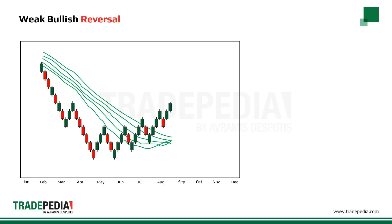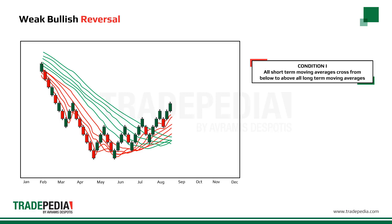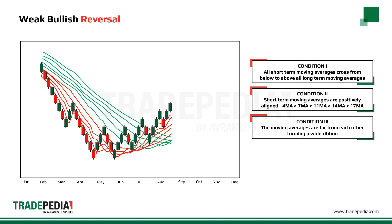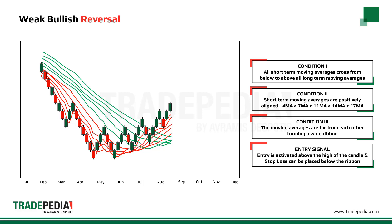A weak bullish reversal signal is given when the following conditions are met. Condition one: all short-term moving averages cross from below to above all long-term moving averages. Condition two: short-term moving averages are positively aligned — that is, the 4 period average is above the 7th, the 7th above the 11th, the 11th above the 14th, and so on. Condition three: the moving averages are far from each other, forming a wide ribbon, giving a weak signal. The entry is activated above the high of the candle that generated the signal, and a stop-loss can be placed below the moving average ribbon.